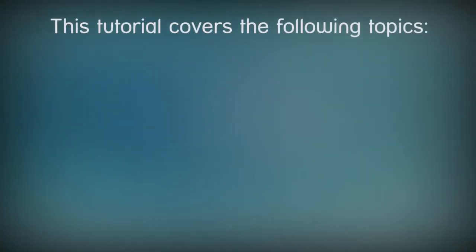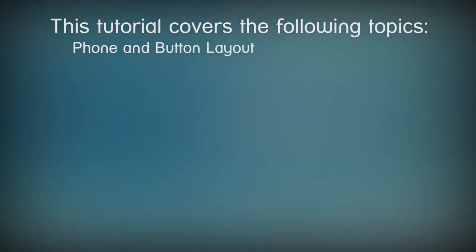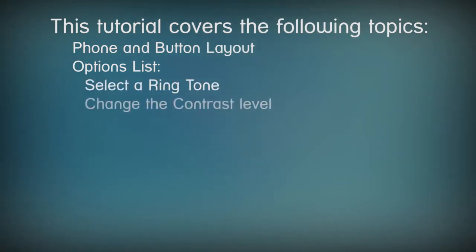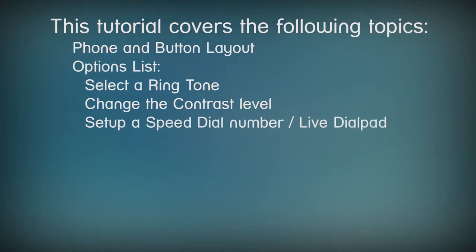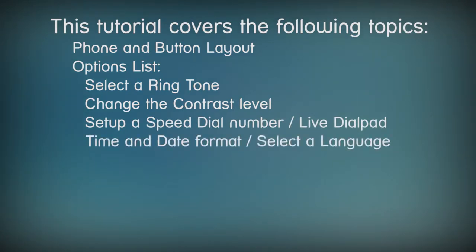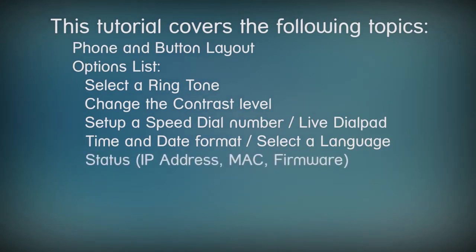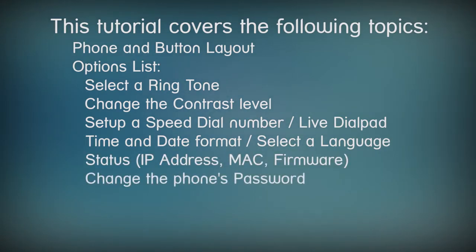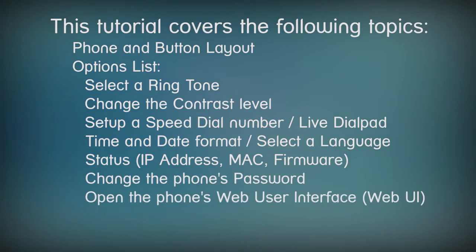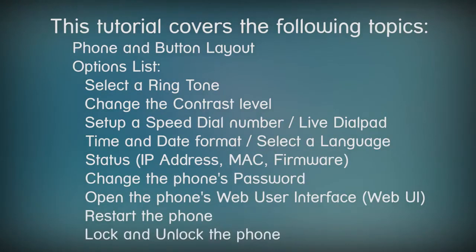In this tutorial, I'll cover the following topics. We'll take a quick look at the layout of the phone. Then we'll go through a series of options where you can select a ringtone, change the contrast level of the LCD screen, set up a speed dial number and live dial pad, modify how the date and time are displayed, choose a language, check the status of the phone, change the phone's password, open the phone's web user interface, restart the phone, and lock and unlock the phone.